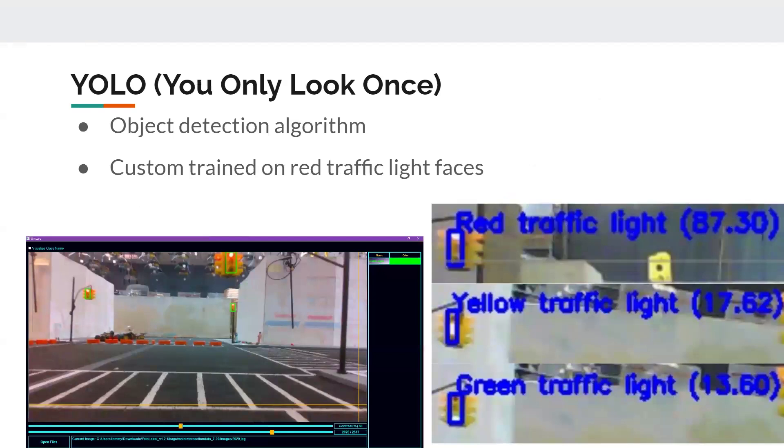So for the task of object detection, we would use something called YOLO, which is an object detection algorithm and training. On 2000 custom images, we can detect traffic lights.